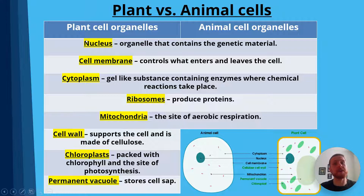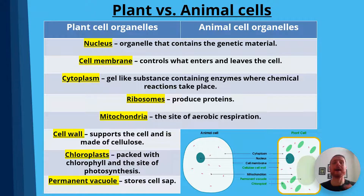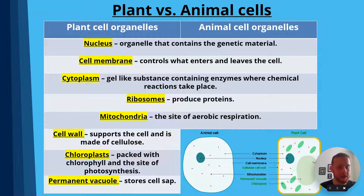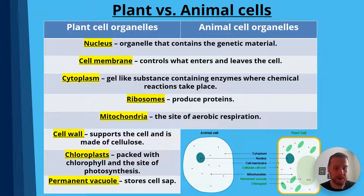Plant cells actually have a few key features that animal cells don't, which you need to learn for your GCSE science exams. First of all, plant cells have a cell wall, which supports the cell and gives it structure, and it's made of cellulose. Next, plant cells have chloroplasts, which are packed with chlorophyll and are the site of photosynthesis — how plants use light to make sugars. Finally, plant cells have a permanent vacuole, which stores the cell's sap. We can see in the bottom right the green chloroplasts, the box-like cell wall around the outside, and the permanent vacuole.